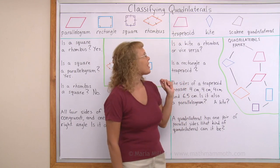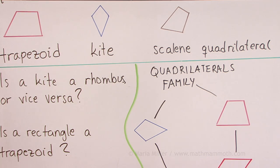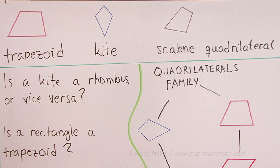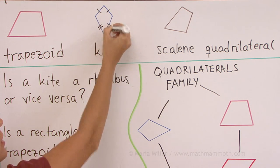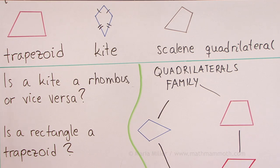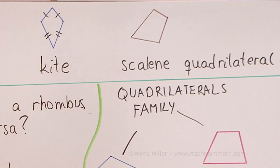A few more special quadrilaterals. A trapezoid — in a trapezoid we have at least one pair of parallel sides. In this one, this side and this side are parallel, and this side and this side are not. The definition says it has at least one pair of parallel sides, so it could have two pairs too. Then a kite — in a kite we have two pairs of congruent sides. These two sides are congruent, and then these two sides are congruent. The congruent sides are neighboring sides touching each other. And then a scalene quadrilateral means that none of the sides are congruent — none of the sides are the same length.